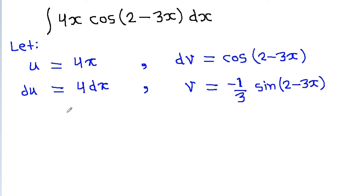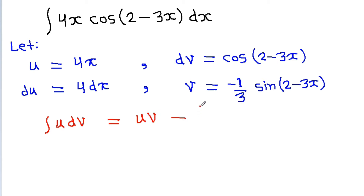Now, we have the integration by parts formula: the integration of u into dv is equal to uv minus the integration of v du. So we can easily put the values from here into this formula.